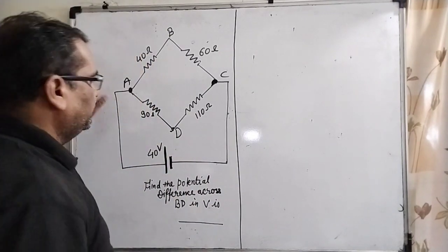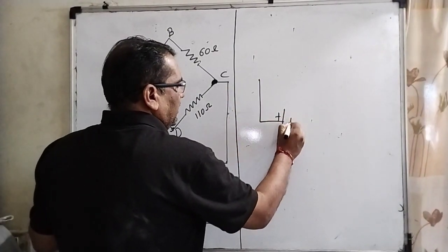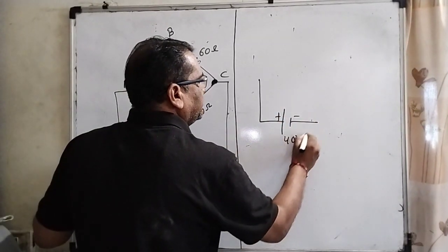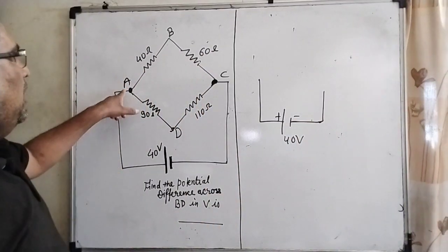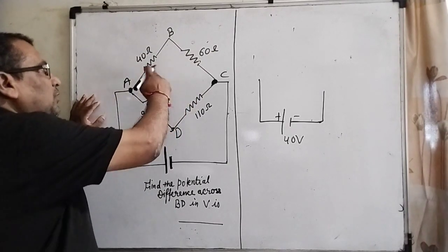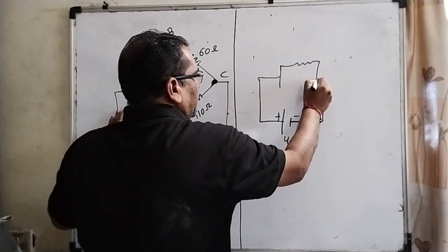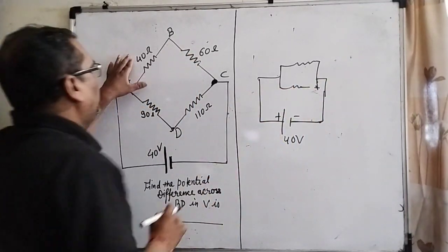This question is so easy. Let us first draw a parallel diagram. Here a 40-volt battery is connected. Now we can see that AB and BC—these two resistances are in series. So here we have to calculate. How much? 40 plus 60.